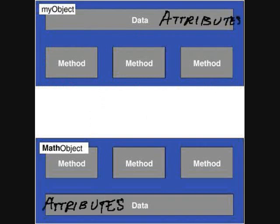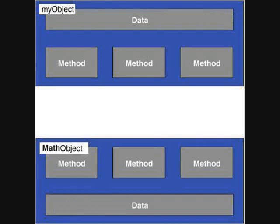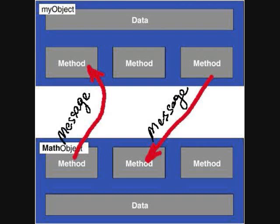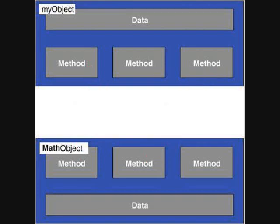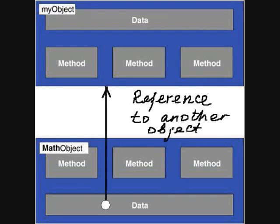Essentially, an object is a collection of methods and its attributes. Objects communicate with each other by sending messages. First, objects must know about each other's existence. We say that an object has a reference to another object.